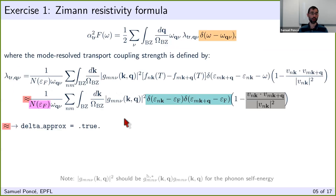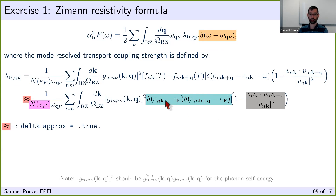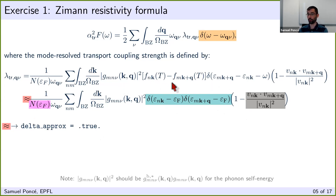To obtain the Eliashberg spectral function you need the mode-resolved transport coupling strength. If you use the delta approximation you can show these reduce to having a Dirac delta around the Fermi level. This tilde approximation is triggered when you set that variable to true; otherwise EPW calculates it explicitly. The explicit calculation is less stable — it converges slower and requires a much denser grid and smaller broadening — whereas the delta approximation is better behaved, so we use it in the hands-on.